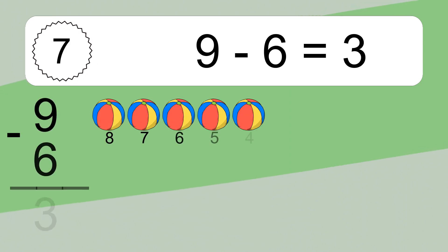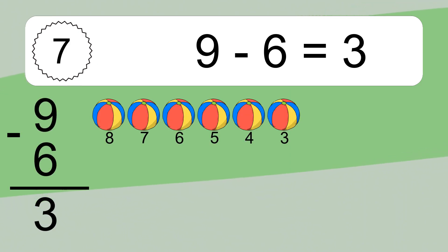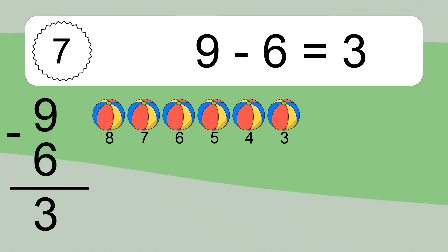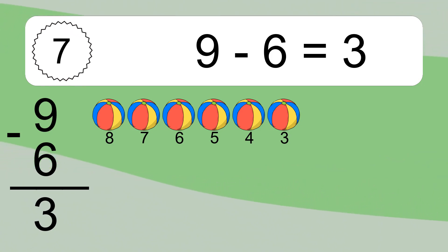9 minus 6 equals what? 9 minus 6 equals 3. Let's count it: 8, 7, 6, 5, 4, 3.